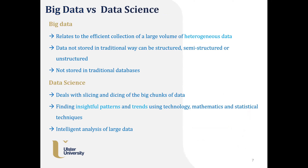Big data and data science — what does it mean? Big data is more connected with the storage part: how you're going to store your data, where it's existing, and in what format. Whereas data science is where you do all the dicing, processing, and analyzing. So big data is the storage and data science is the application, and that is where AI and machine learning come into picture.